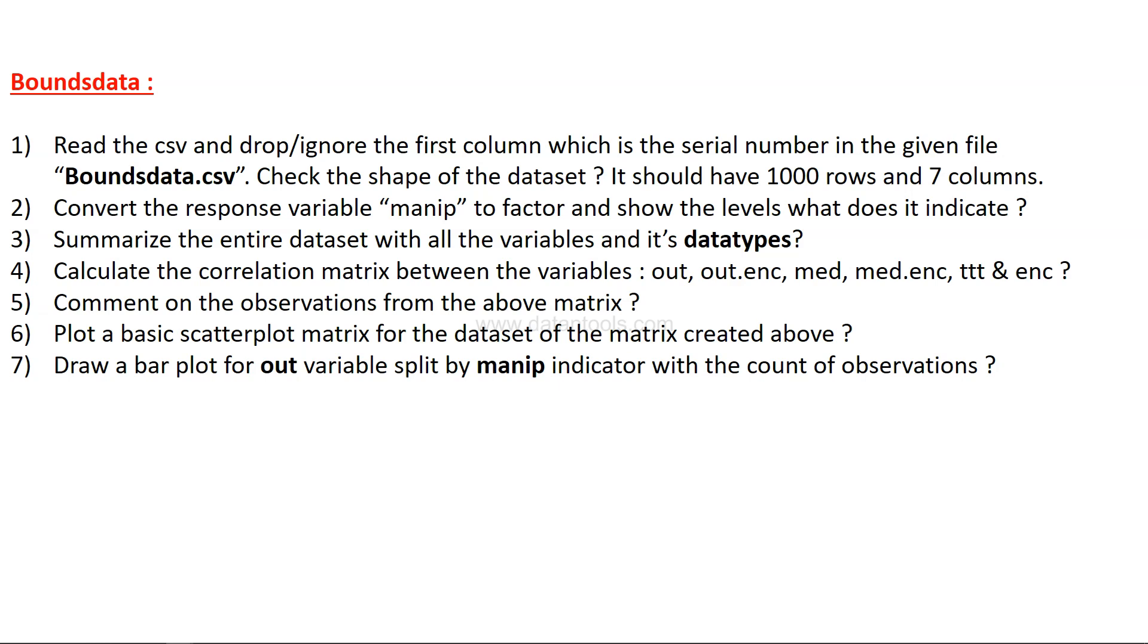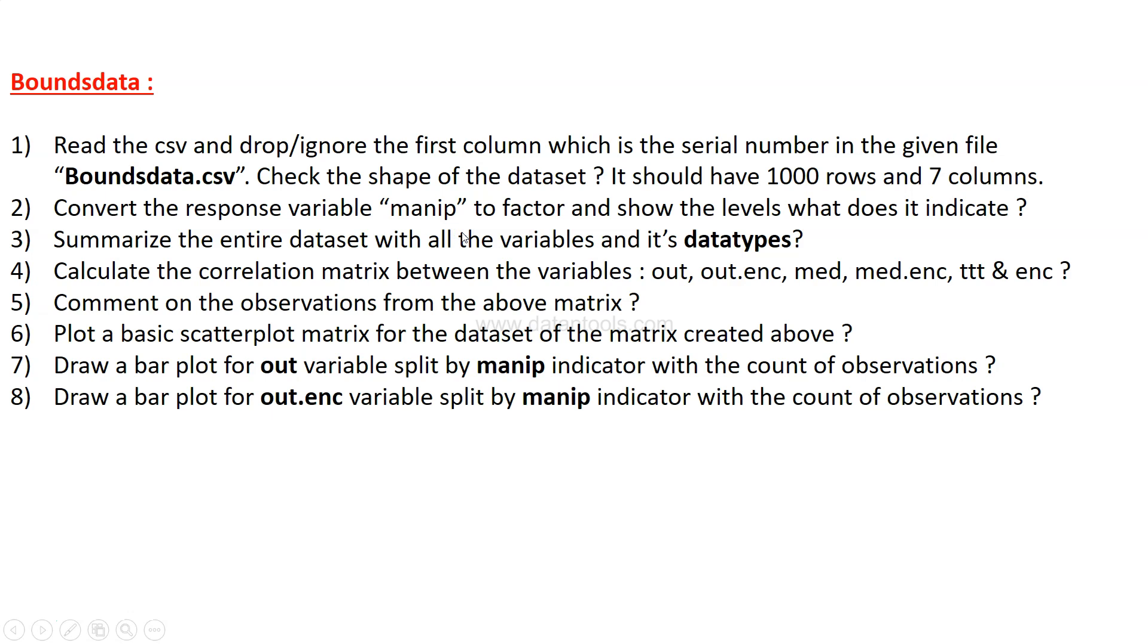Plot a basic scatter plot matrix for the dataset of the matrix created above. After that, draw a bar plot for out variable split by manip indicator with the count of observations, and do the same for out.enc variable. What is the difference between these two? Comment on the observations from the plots above in question 7 and 8, very important because if you will not be able to write your observations, the rest of the analysis becomes very difficult.